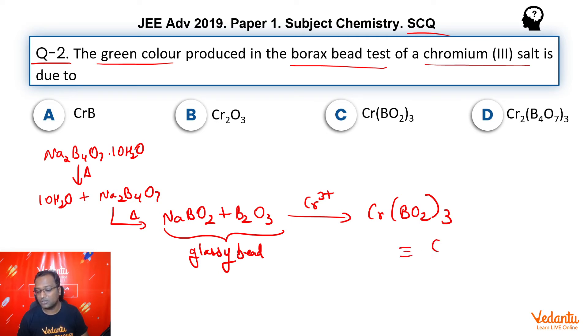In some texts, this is also written as Cr2O3.3B2O3 and that's also perfectly all right. There is no issue there as well. So, the answer here is C.